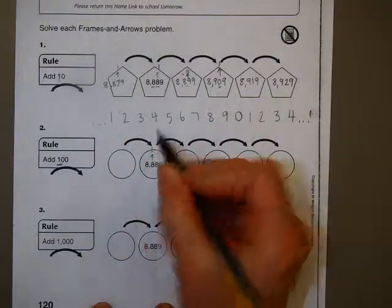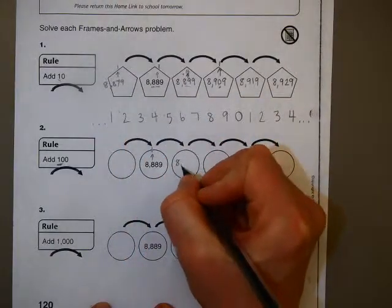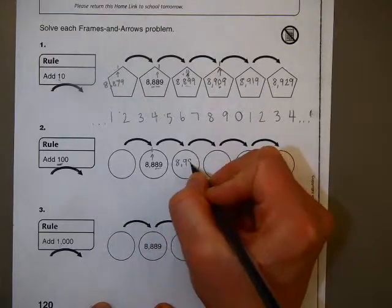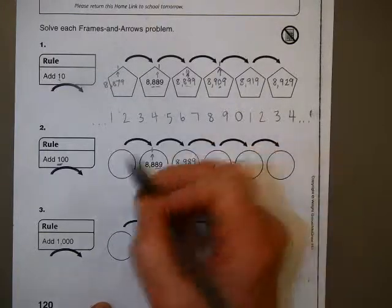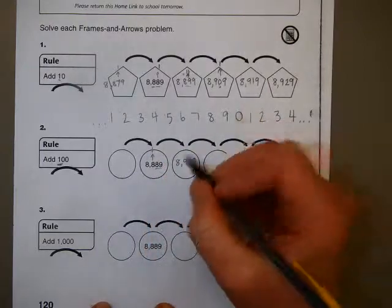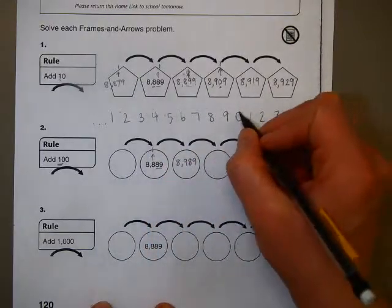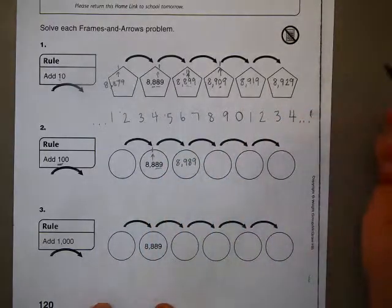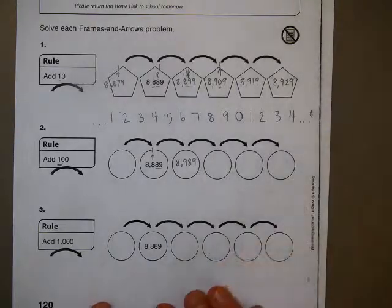So, if we go up one here, it's going to be eight, nine. And these numbers stay exactly the same. Eight, nine. So, this hundreds number is the only one that changes first, unless it goes to a zero. And then the thousands place changes, too.